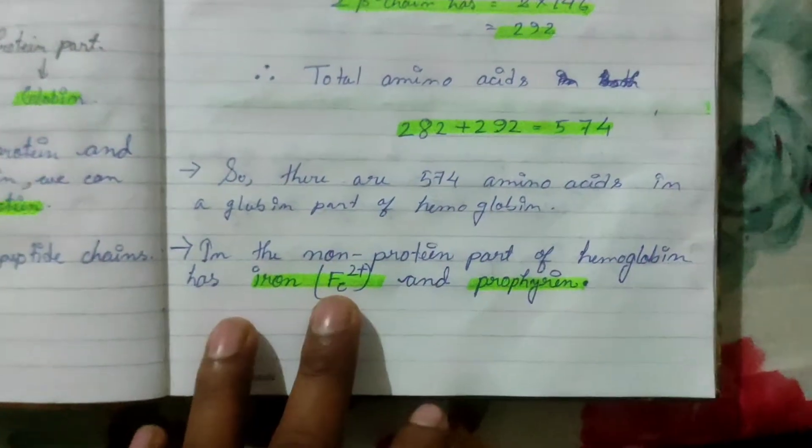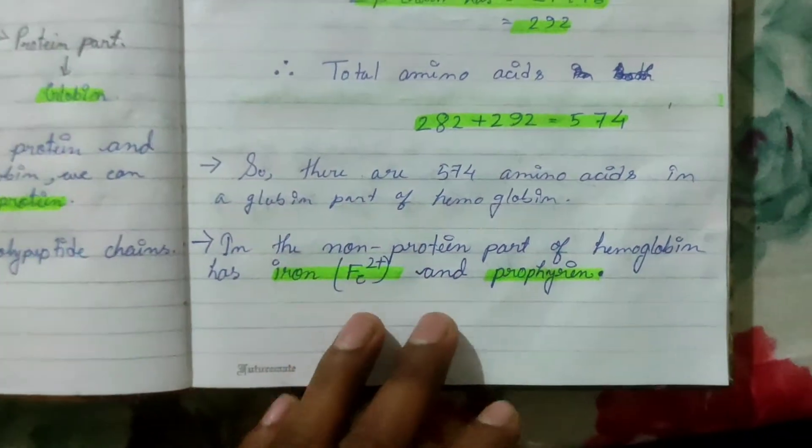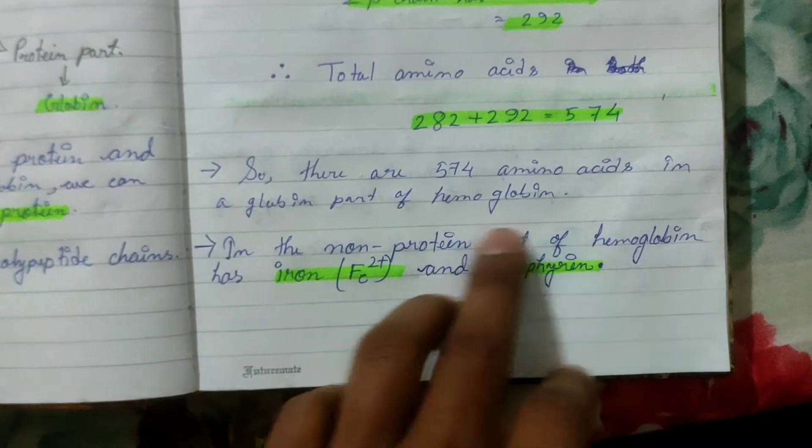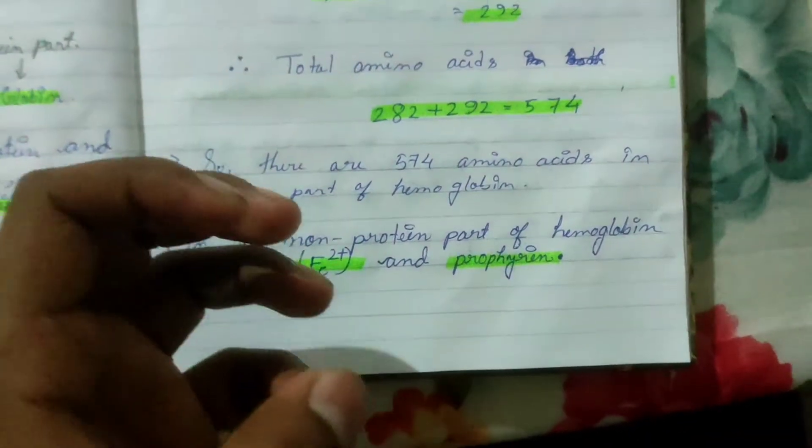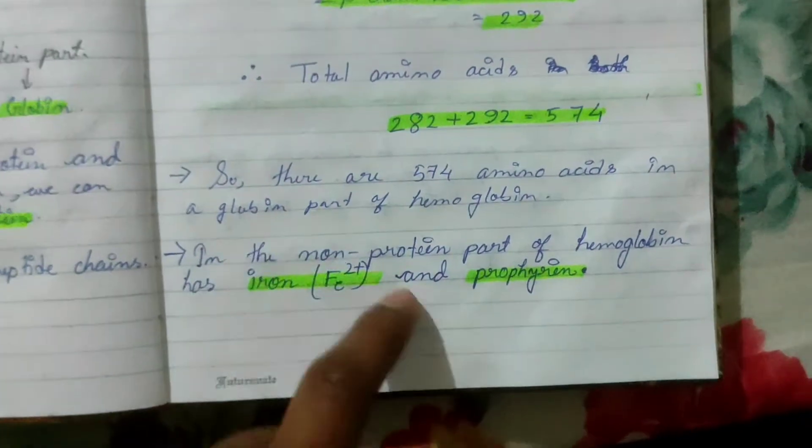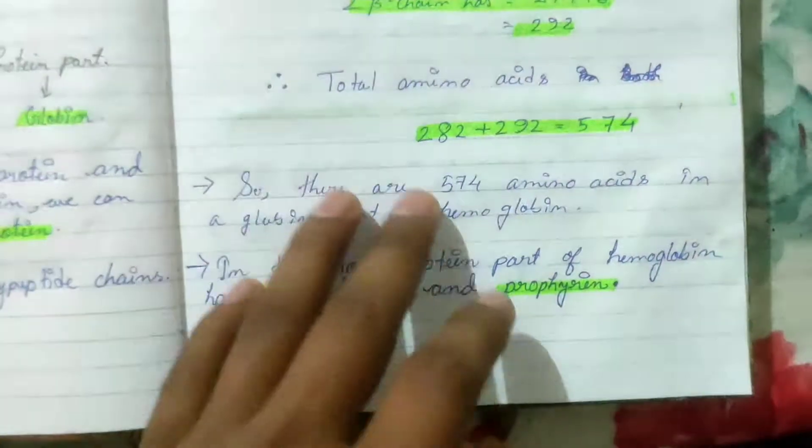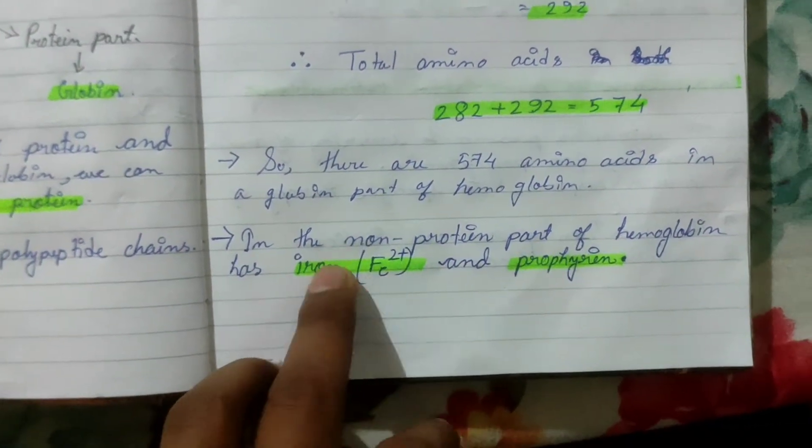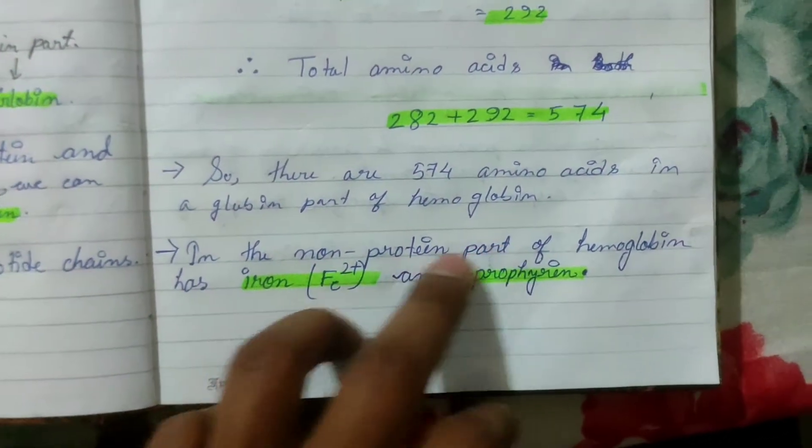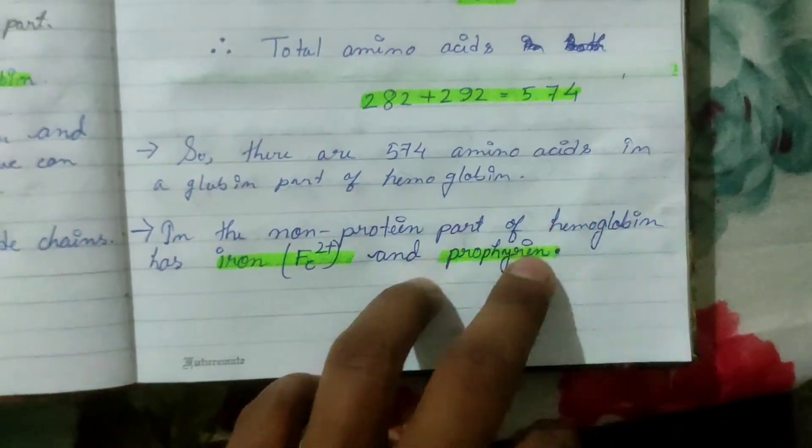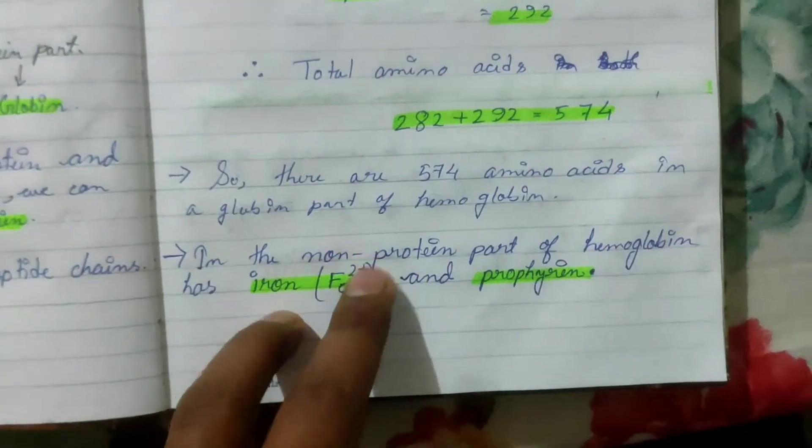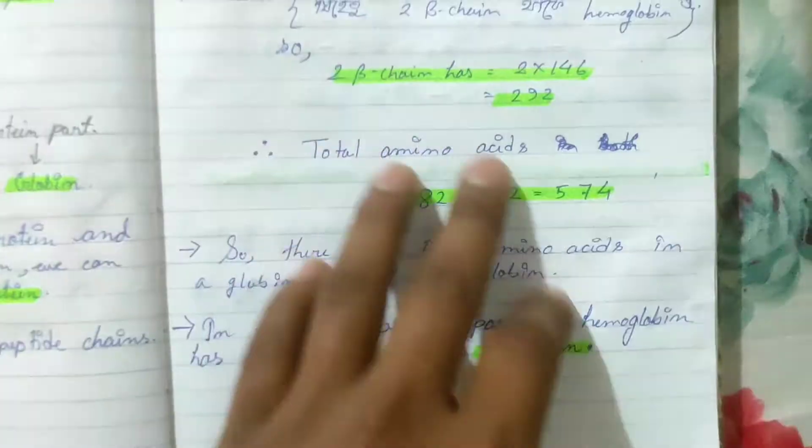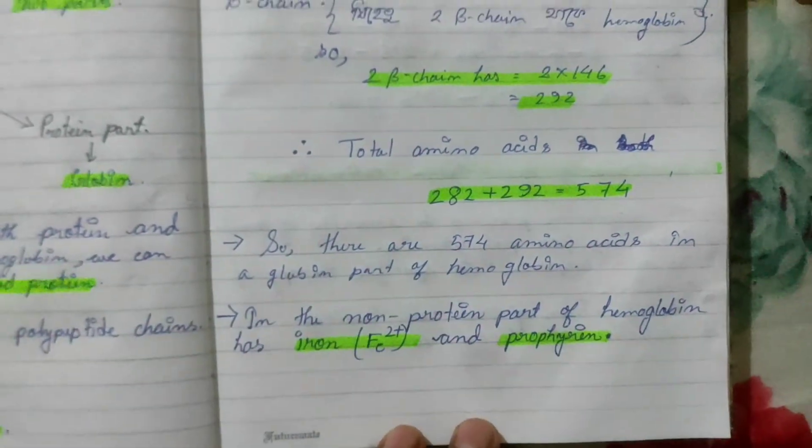In the non-protein part, the heme part contains iron and porphyrin. Fe2+ iron is the red color pigment, which is why our RBC color is red.